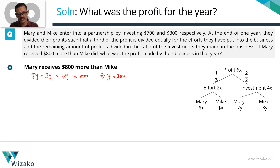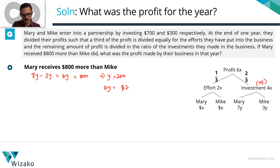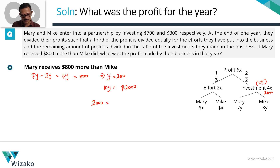With y equal to 200 dollars, the investment component is totally equal to 10y. So the 10y component equals 2,000 dollars. This 2,000 dollars is two-thirds of the profit. So profit equals 2,000 times 3 divided by 2, which equals 3,000 dollars.